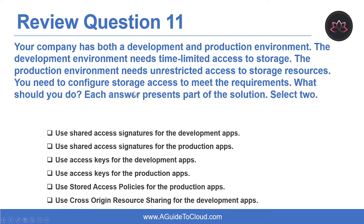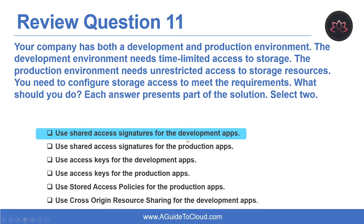Question eleven: your company has both a development and production environment. Development needs time-limited access to storage; production needs unrestricted access. Select two answers. Use shared access signatures for the development app, and use access keys for the production apps. SAS provides more granular storage access — you can limit to read-only, specific services, and a specific time window. Access keys provide unrestricted access, which meets the production requirement.